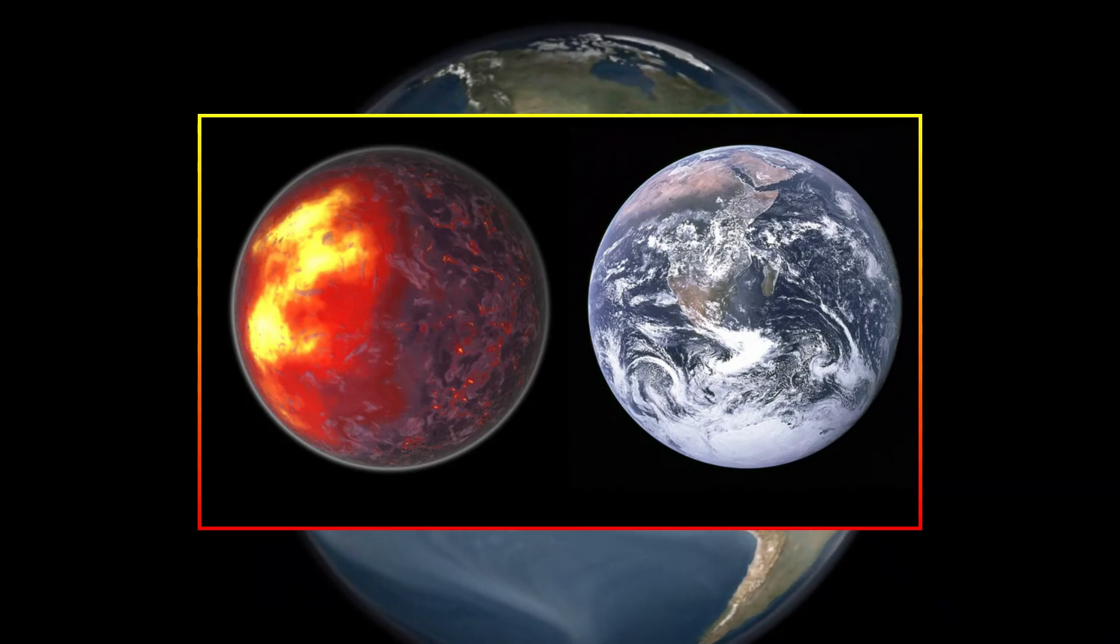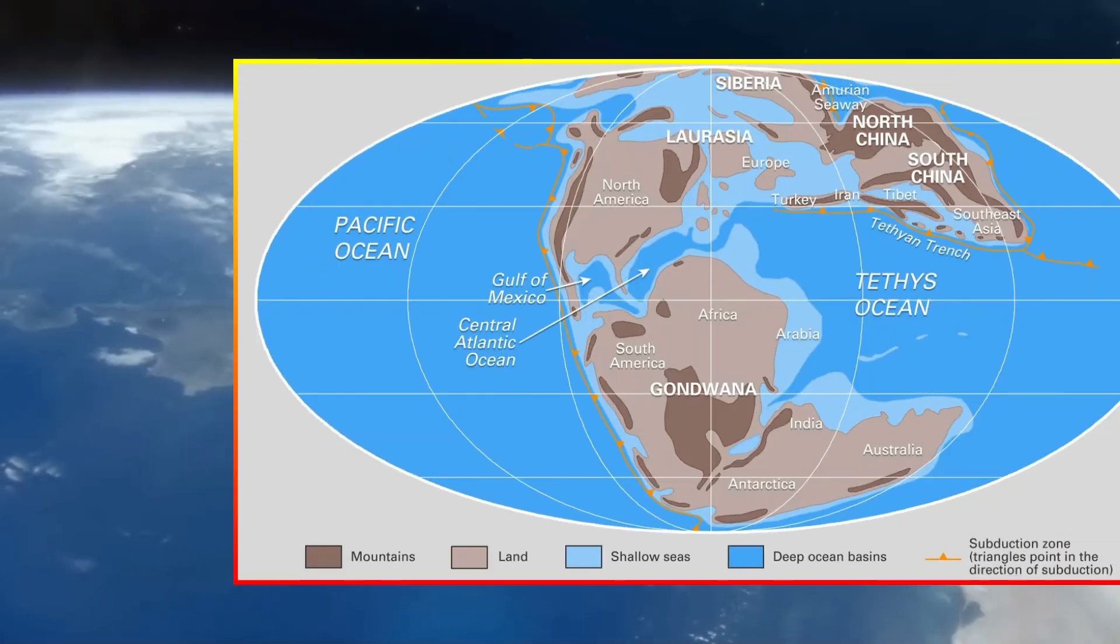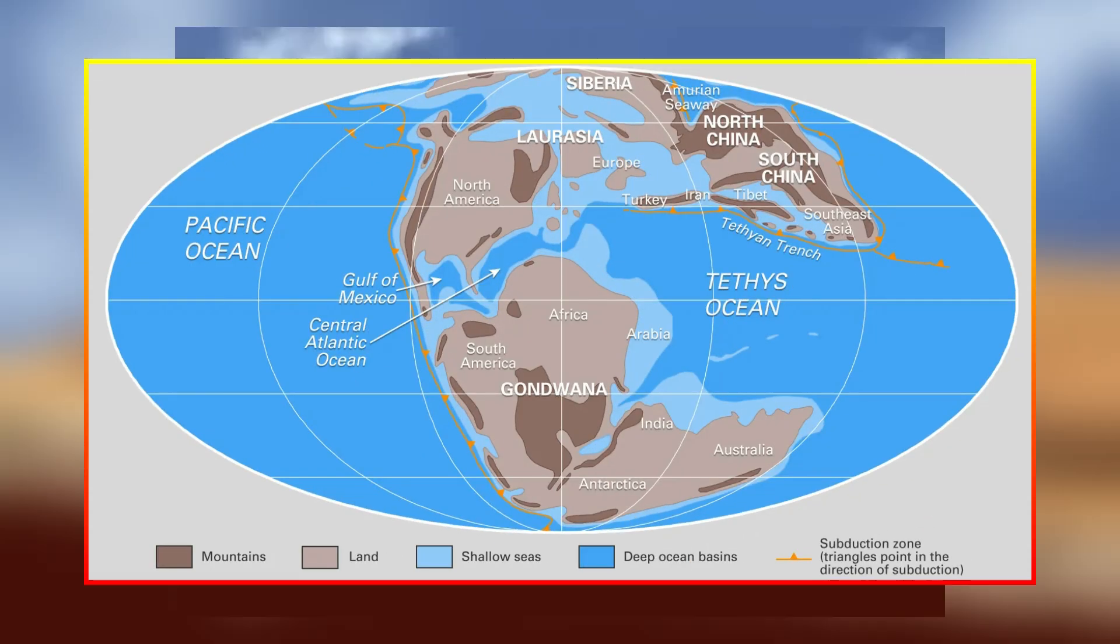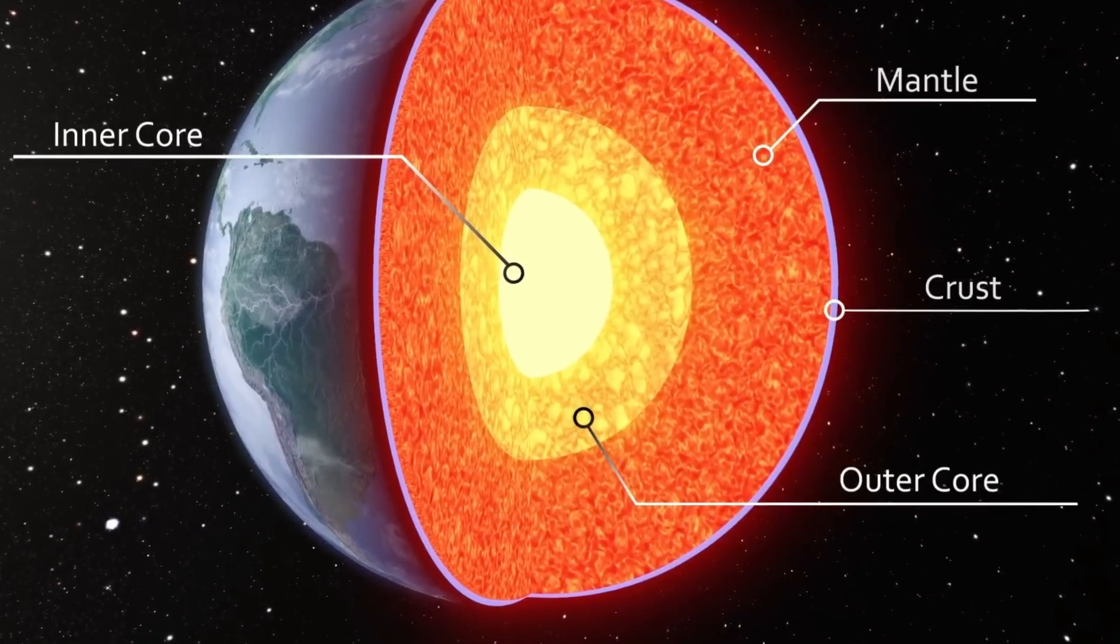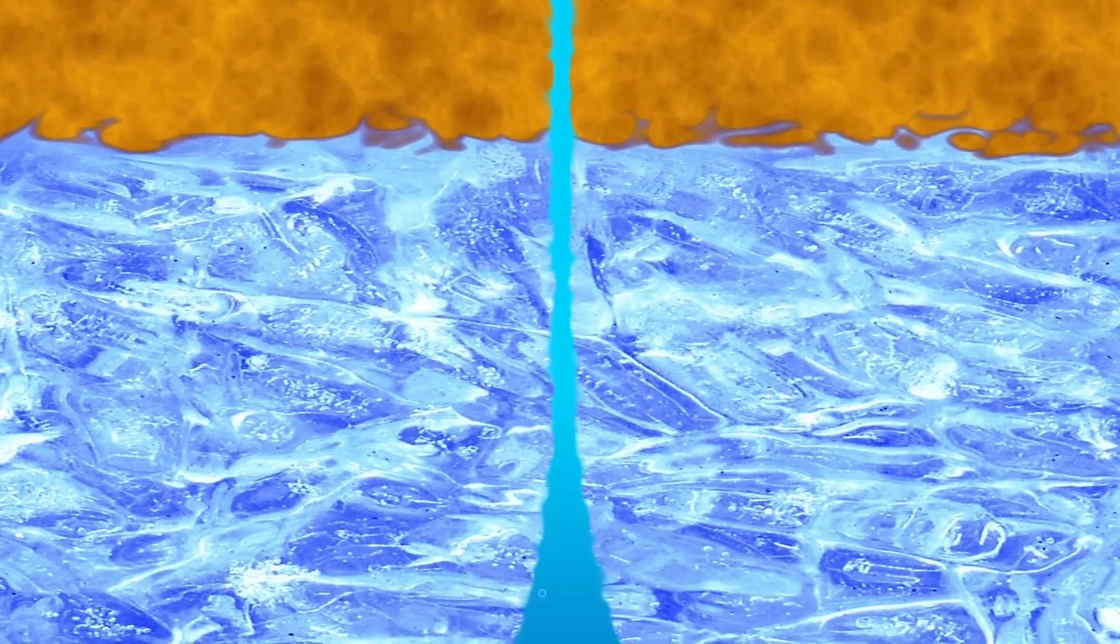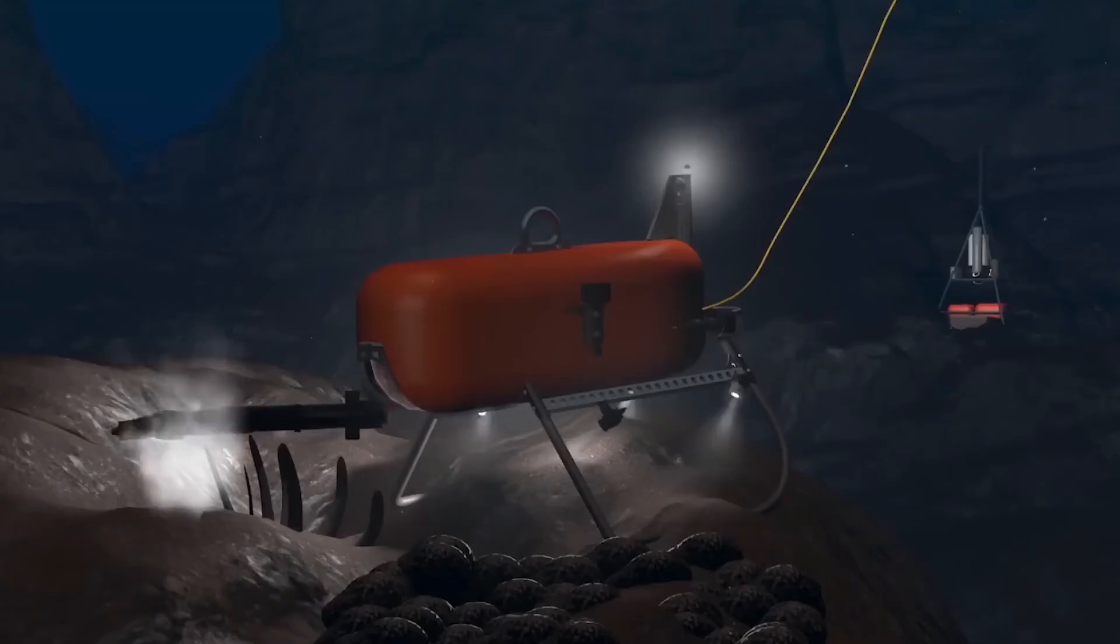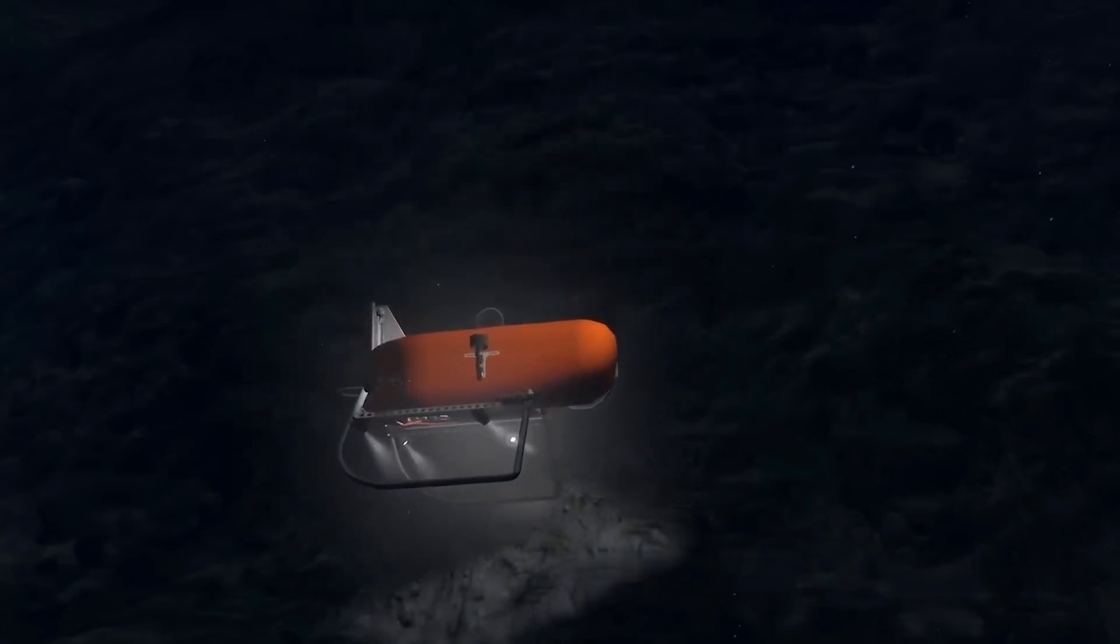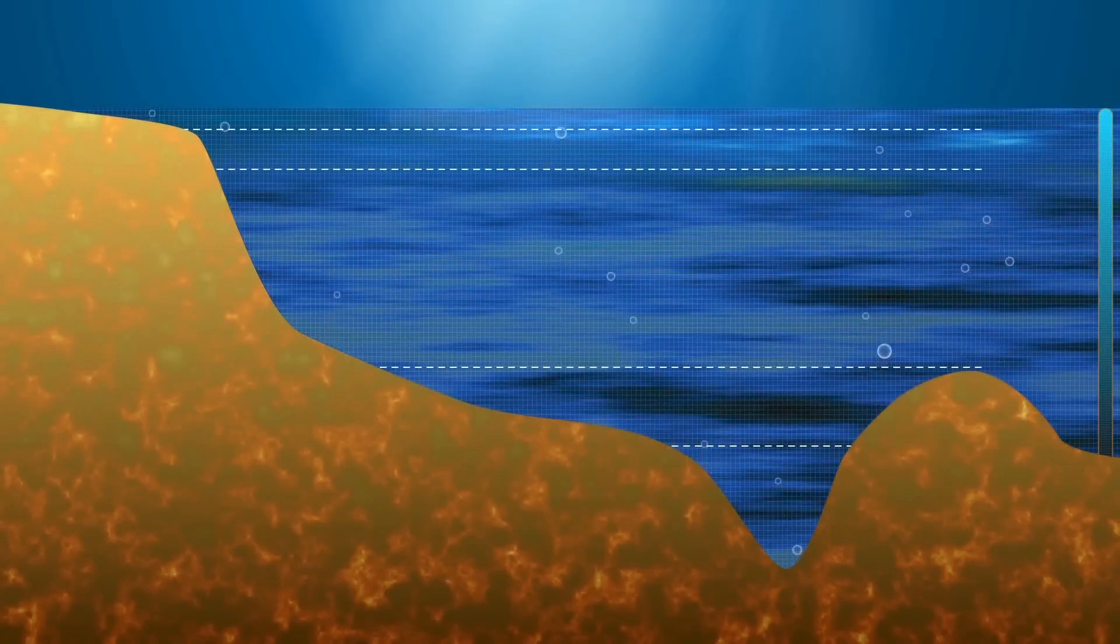The implications of these discoveries are staggering as they could dramatically reshape our understanding of Earth's history. If these anomalies are remnants of ancient landmasses or debris from early planetary collisions, they could offer a new perspective on the events that shaped Earth's surface long before the age of plate tectonics. Perhaps these anomalies are evidence of Earth's chaotic early years, when violent impacts or the merging of proto-continents shaped the planet. If these structures are indeed remnants of ancient supercontinents, it could suggest that Earth's tectonic cycle is far more dynamic and interconnected than we've ever imagined.